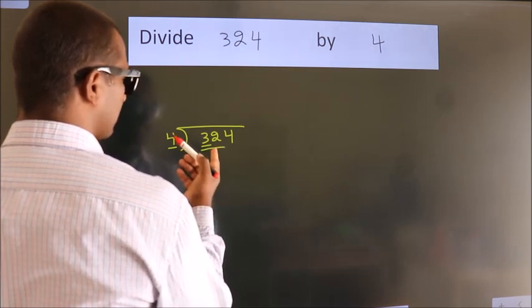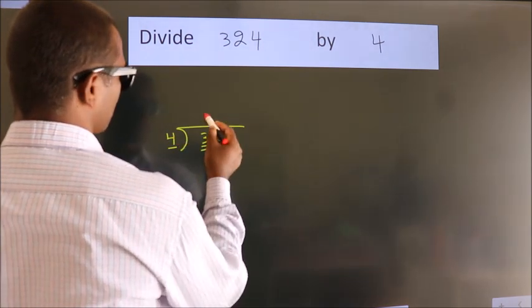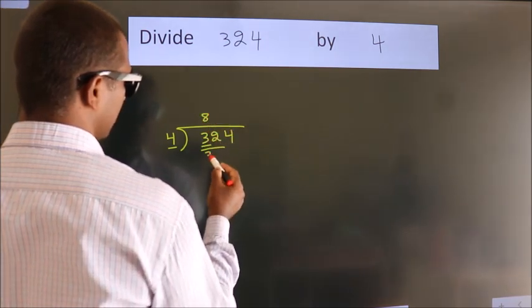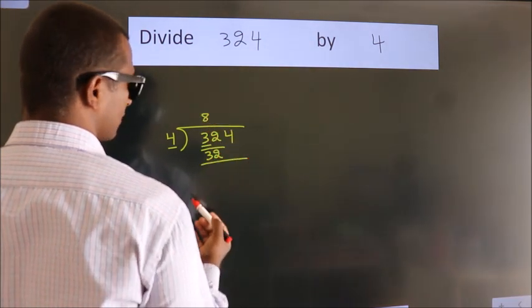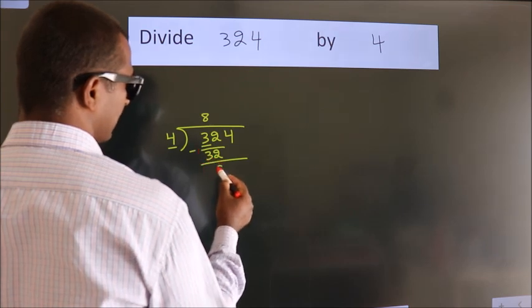When do we get 32? In the 4 table. 4 times 8 is 32. Now we should subtract. We get 0.